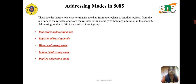Memory optimization is another reason for using addressing modes. Addressing modes help optimize the use of memory resources by allowing data and instructions to be accessed in the most efficient way possible. For example, using indirect addressing mode can reduce the amount of memory needed to store addresses, while using index addressing mode can reduce the number of memory accesses needed to access a large array of data.